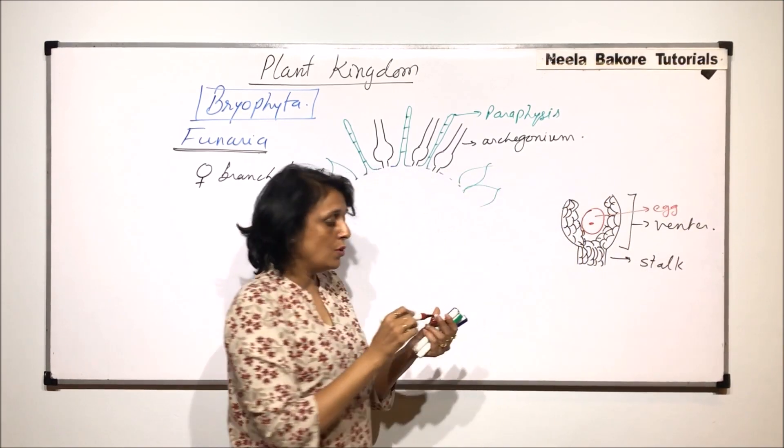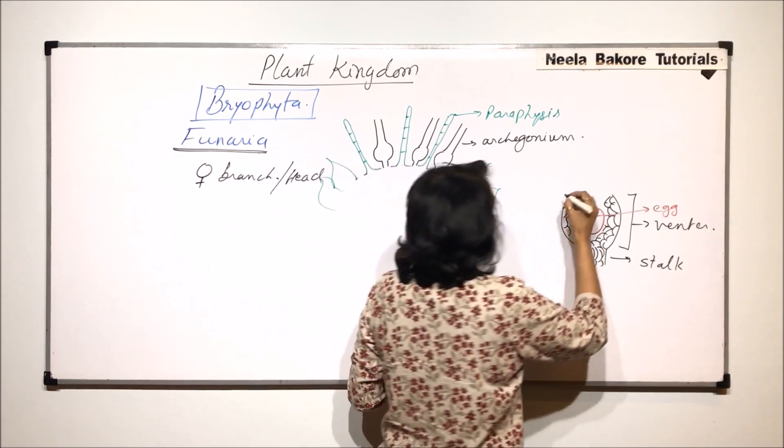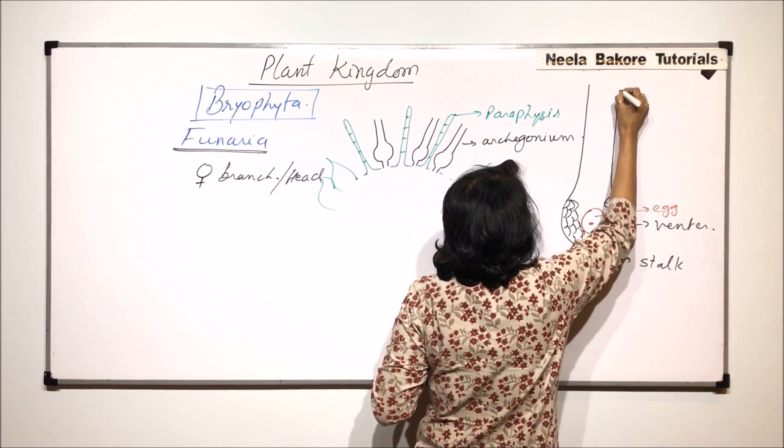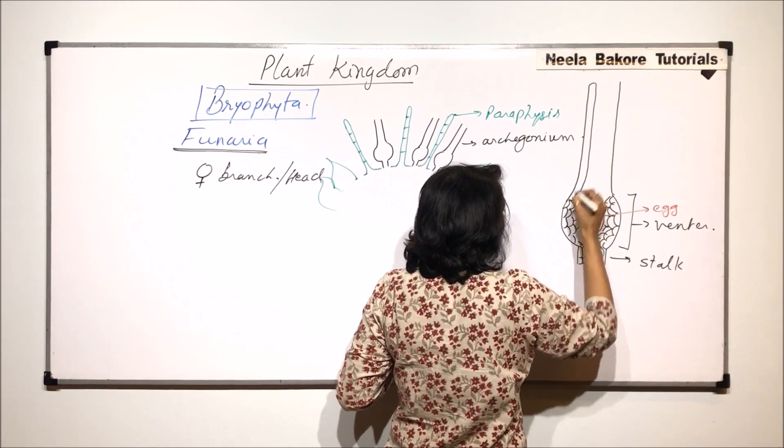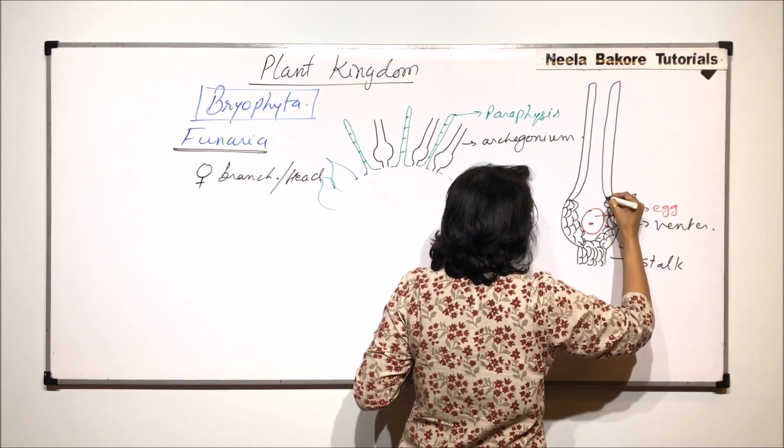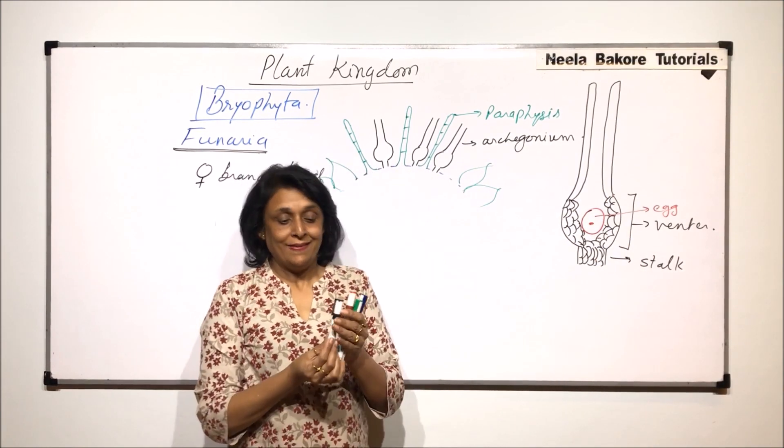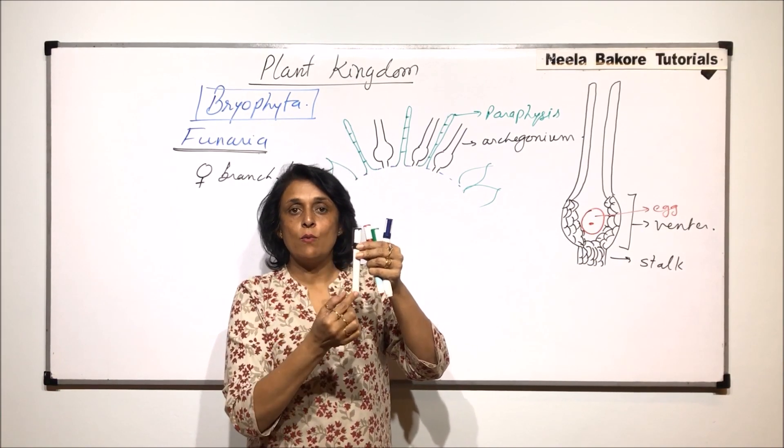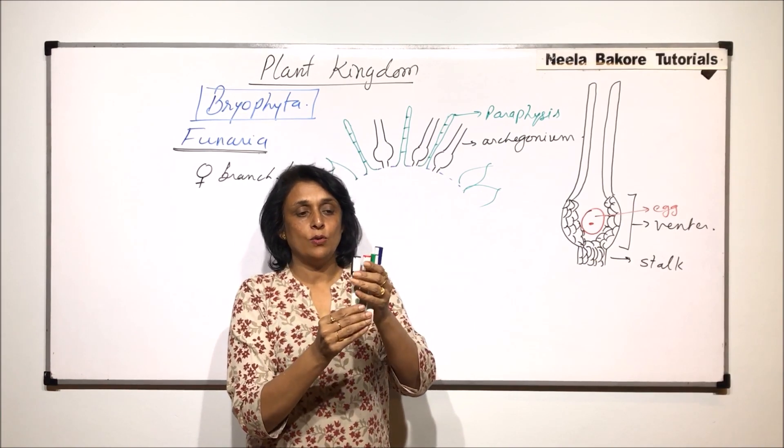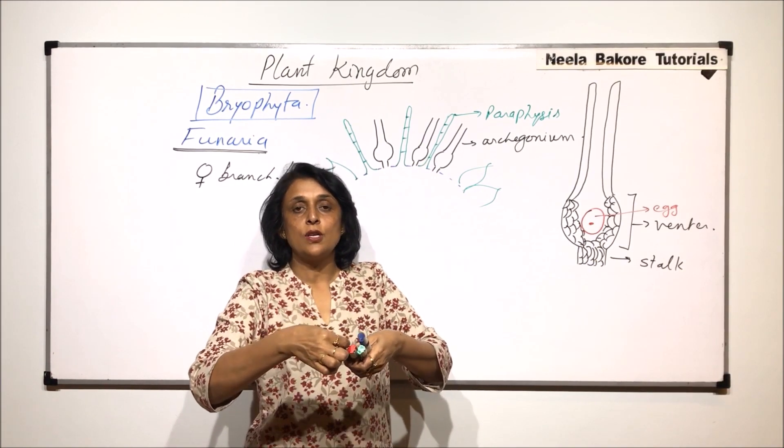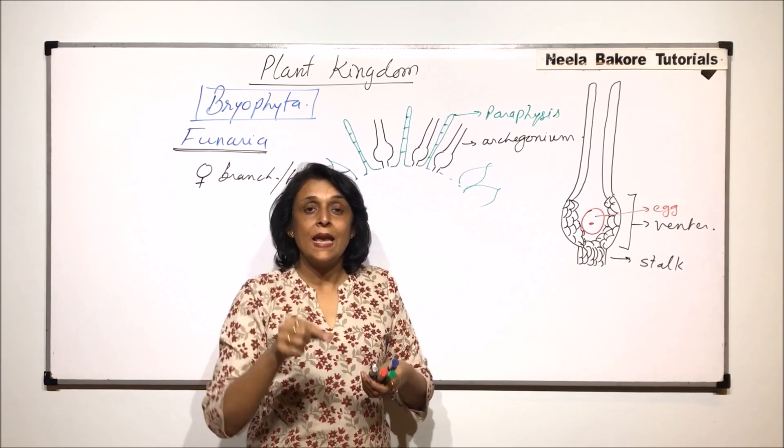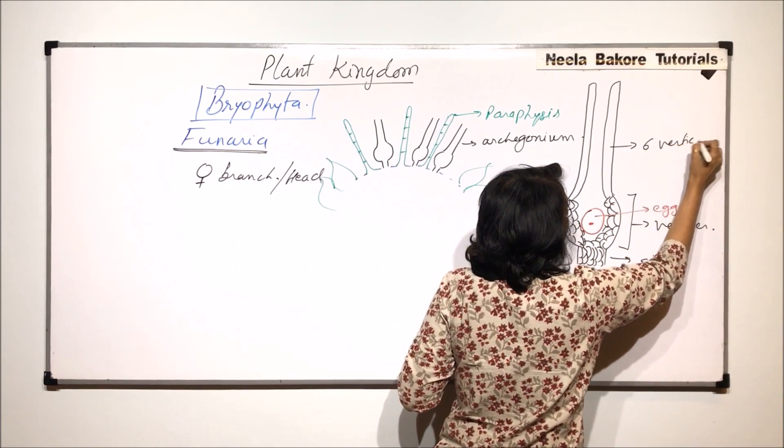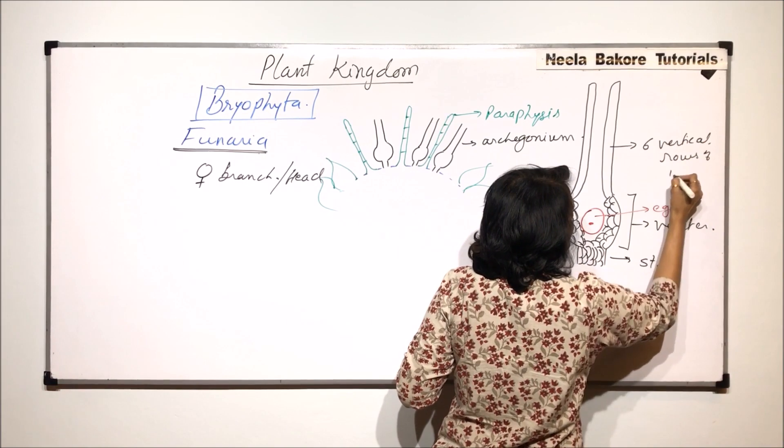Now let us come to the neck part which is the elongated part. So this neck part is a long structure and its wall is made up of six vertical rows of cells. That means if we assume that this makes a vertical row of cells, there are cells and this is like one row. Then there is second row, then there is third row, fourth row. And this is how the six rows would be there. And there would be a space in between which we call the canal.